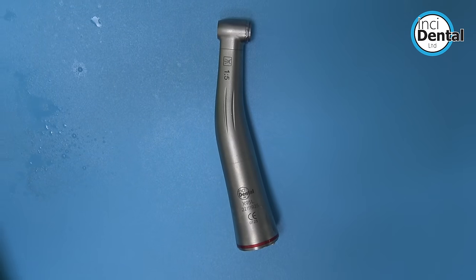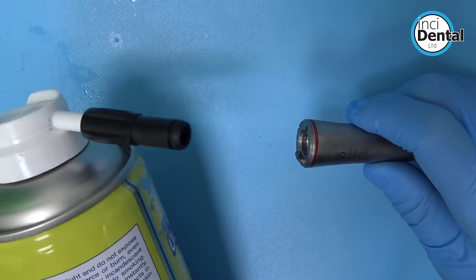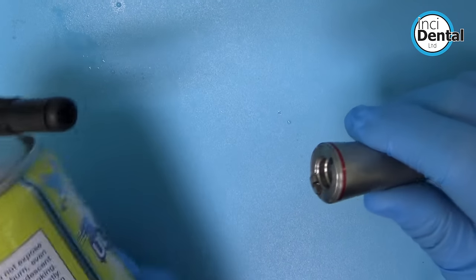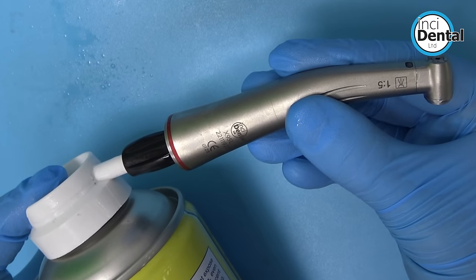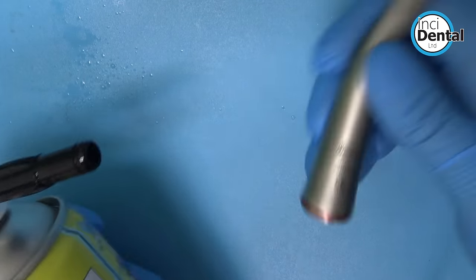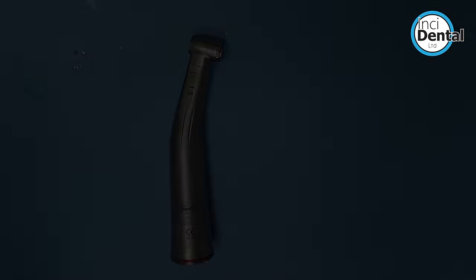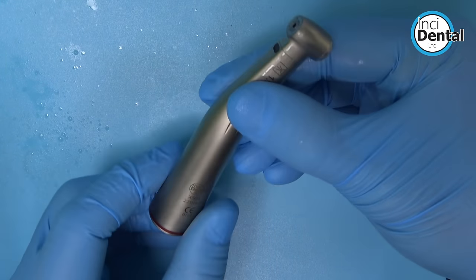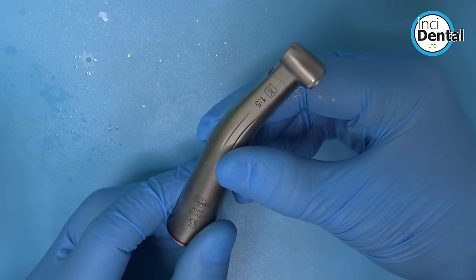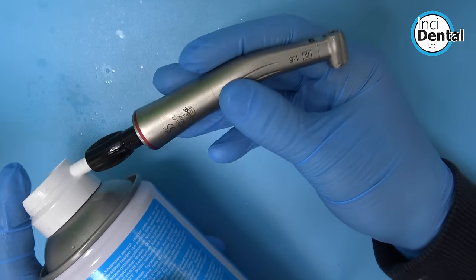So it's the same process again with the one to five. The difference here is that the one to five handpiece will come with a nozzle attachment for the lubrication, so you just insert that in and a couple of seconds on either end. And then it's the same process for purging and removing excess oil. Remember, the ideal way is on your motor. If you don't have access to that, you can use some air spray.